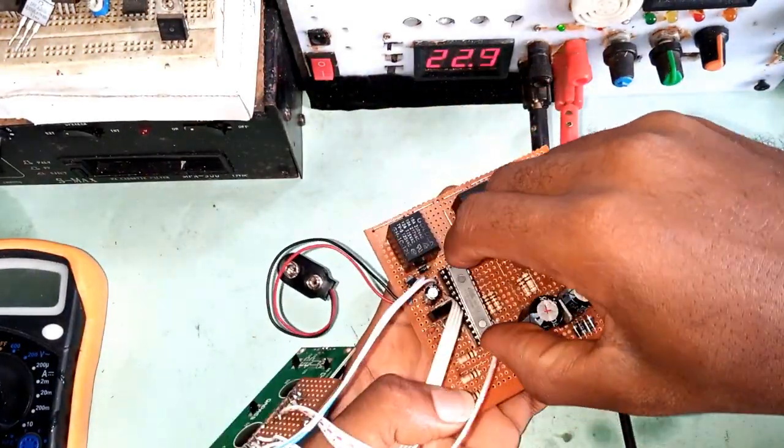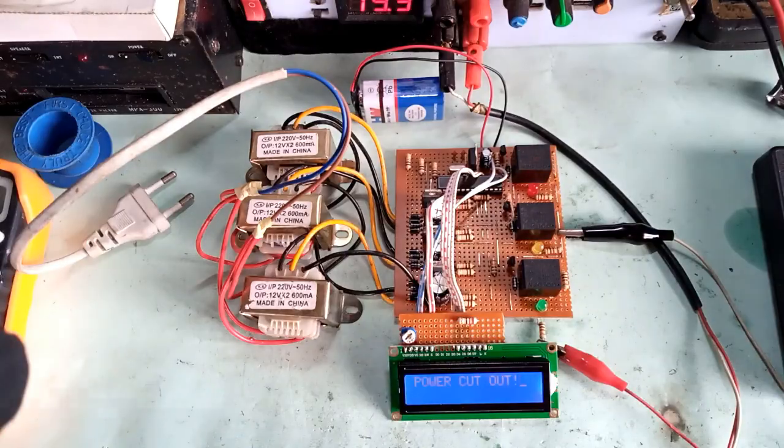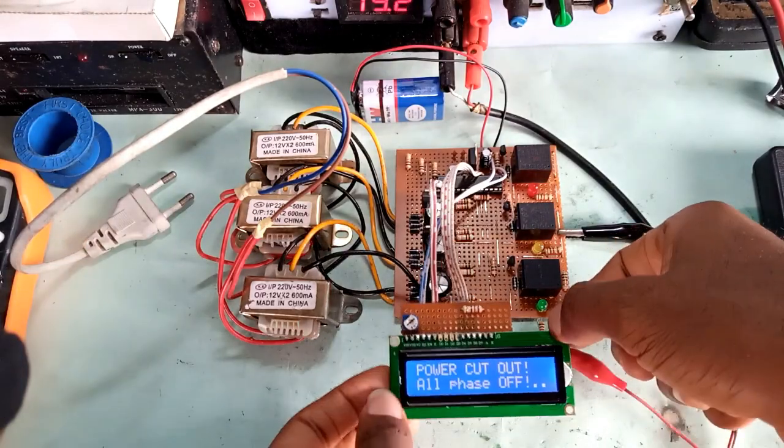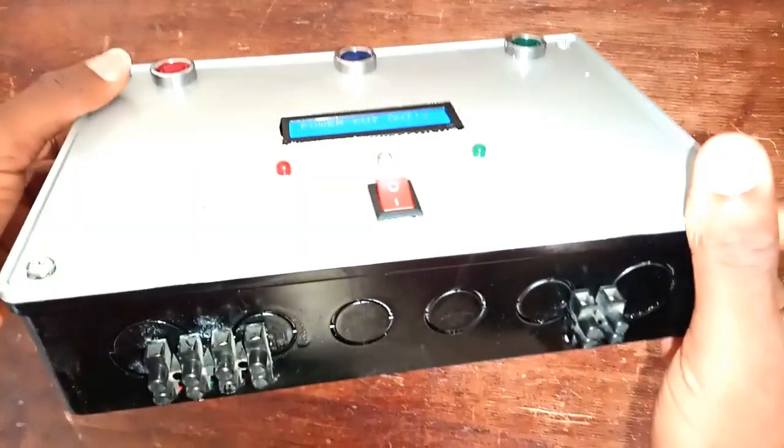In this video, we will guide you on how to build a simple 3-phase automatic changeover system using a programmable microcontroller, precisely the one from the Arduino UNO board and have it looking just like this.